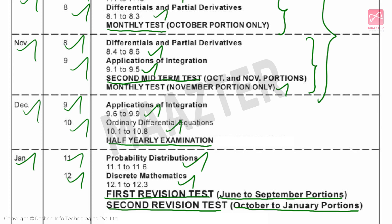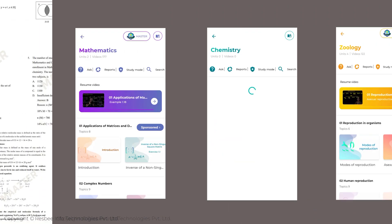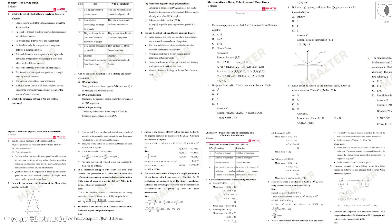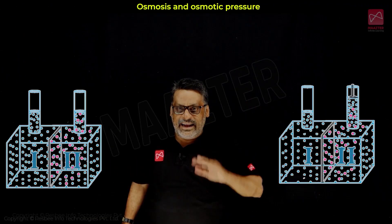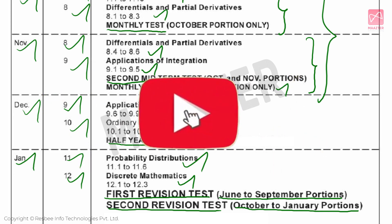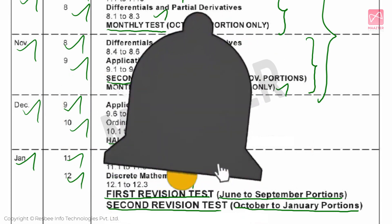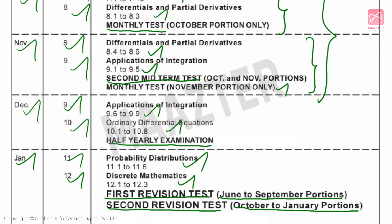So in this video, you have seen how many chapters are completed each month and how many exams are covered. If you follow this plan, you will cover all your portions. If you have any doubts during your study time, install the Master App — you will get all exercises, documents, and videos. We also have a study plan for 11th and 10th standard students. Subscribe to our channel, like the video, and click the bell icon. See you in the next video. Bye!